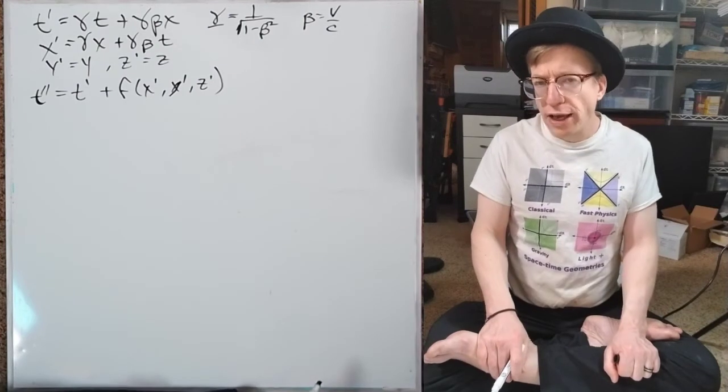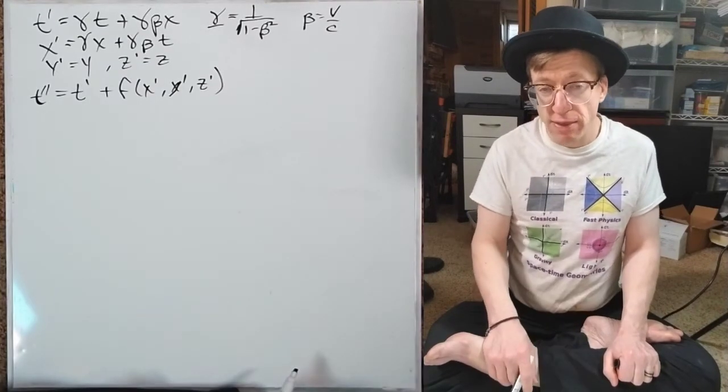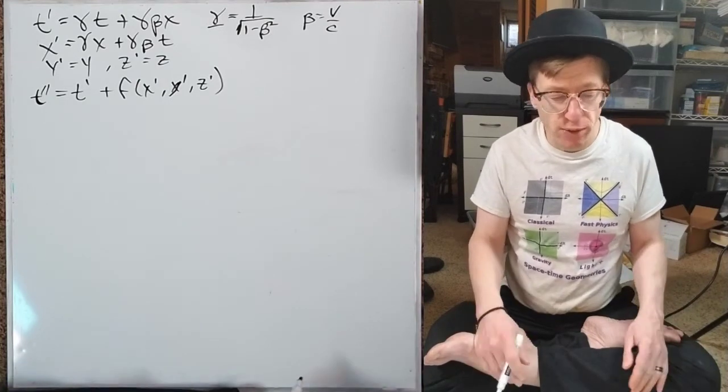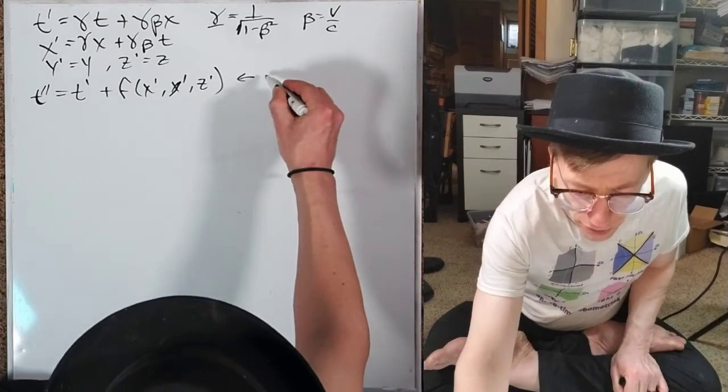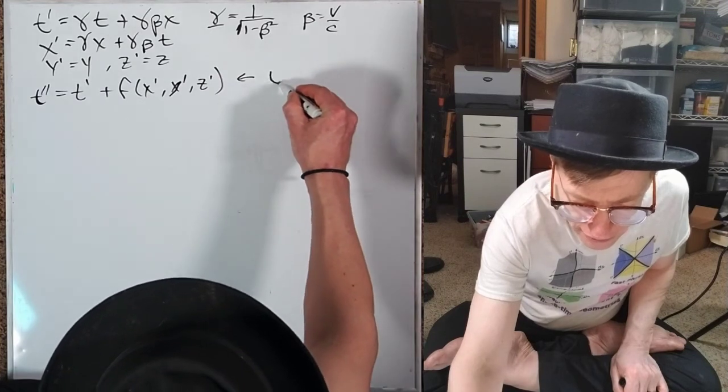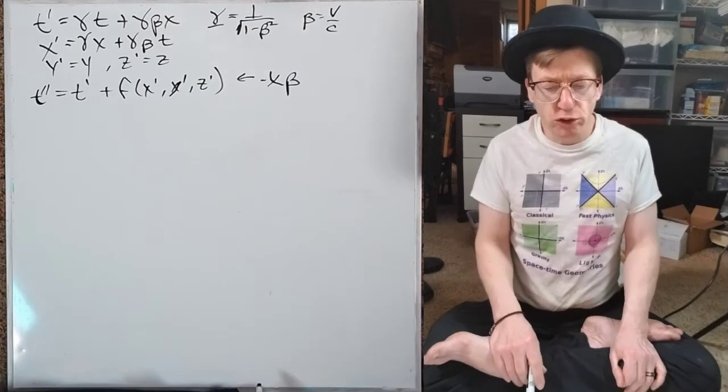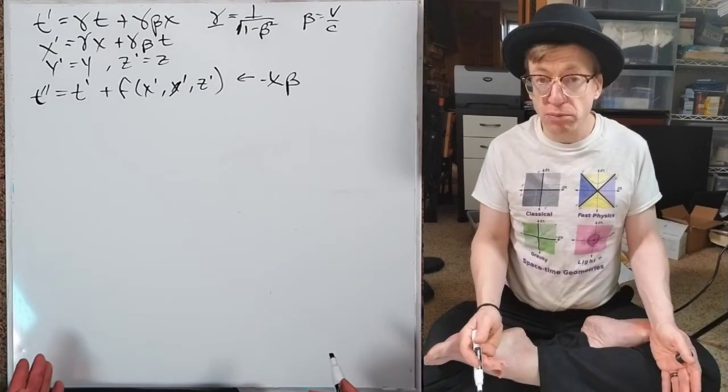In other words, I'm saying that t double prime now equals the t' plus this function of a simple function. What we're going to try and do is simplify those transformation laws. Come up with the simplest expression for what t would be. So what I'm going to do for this guy is I'm going to use a function that is just minus x times beta.